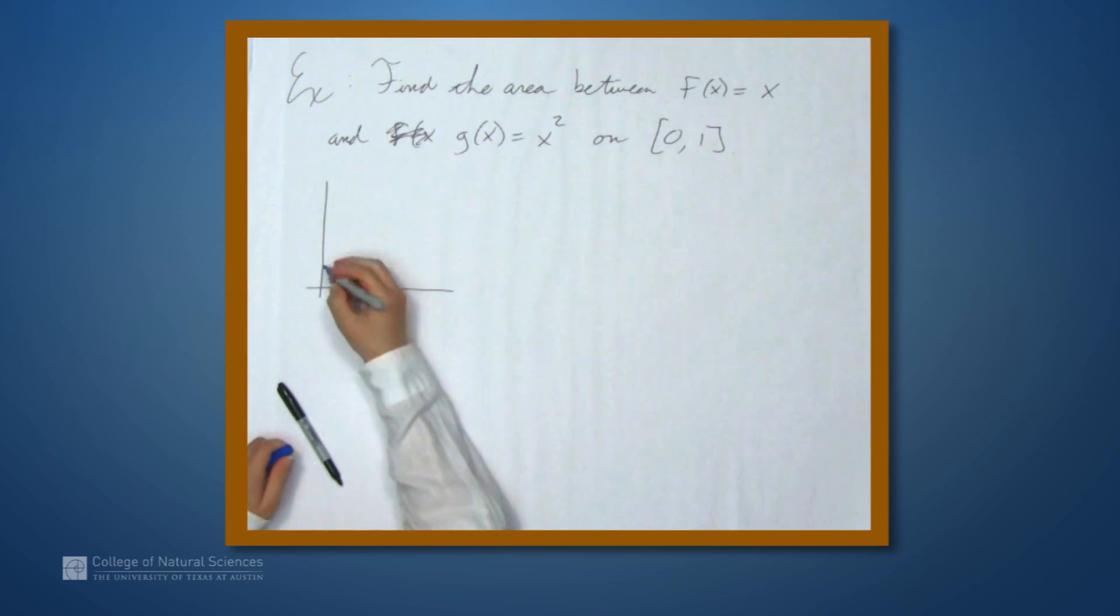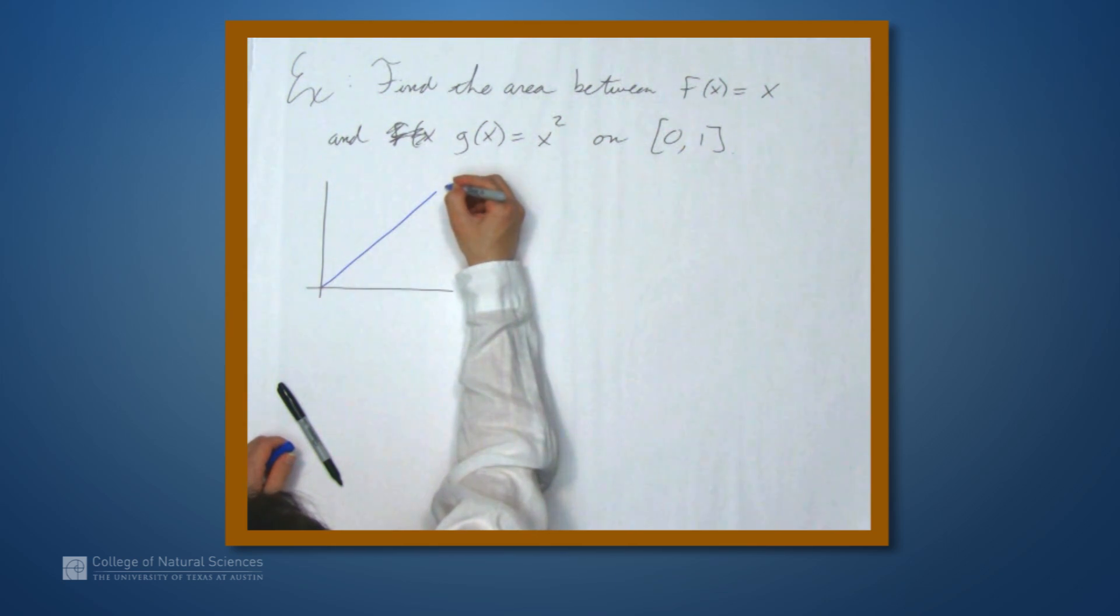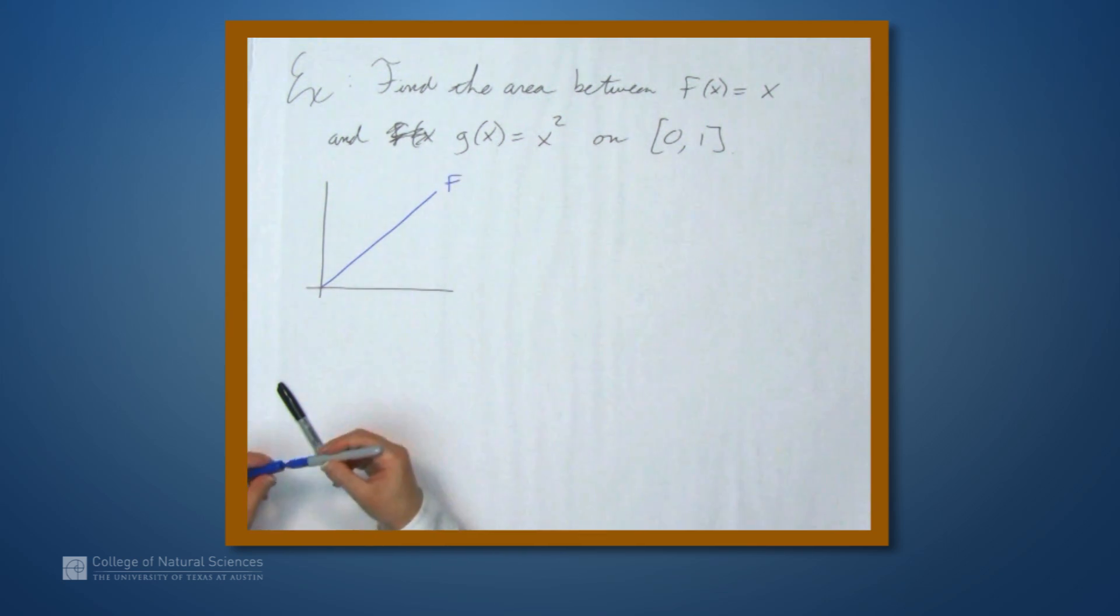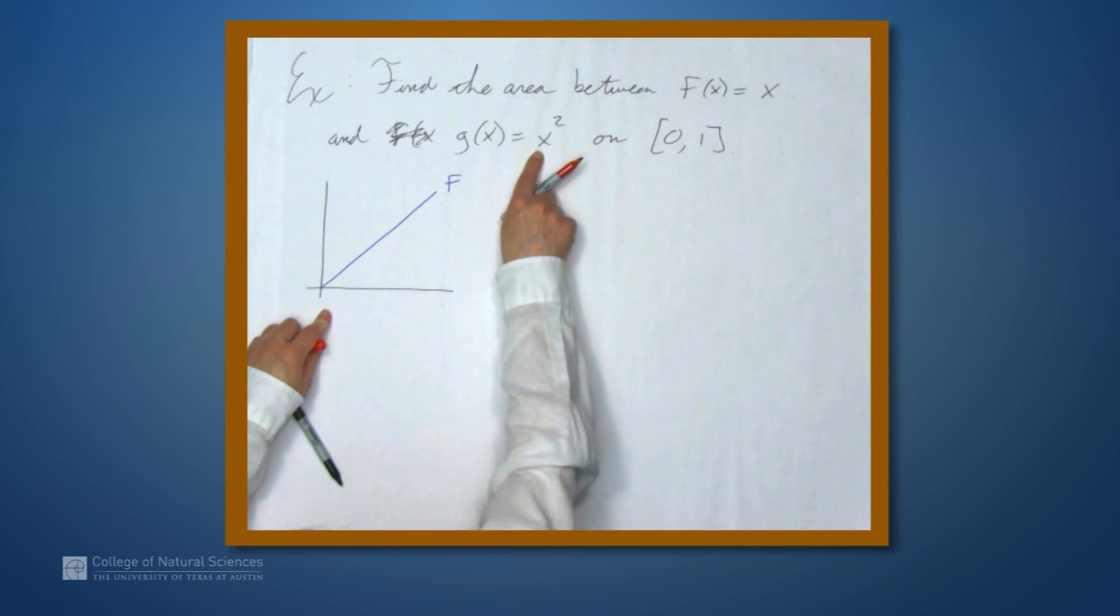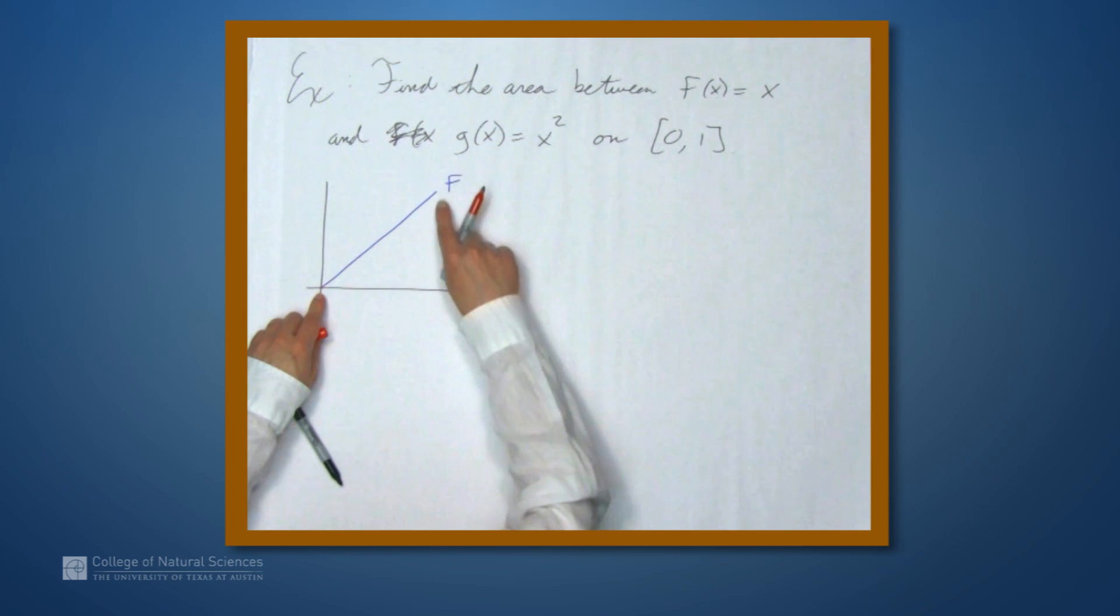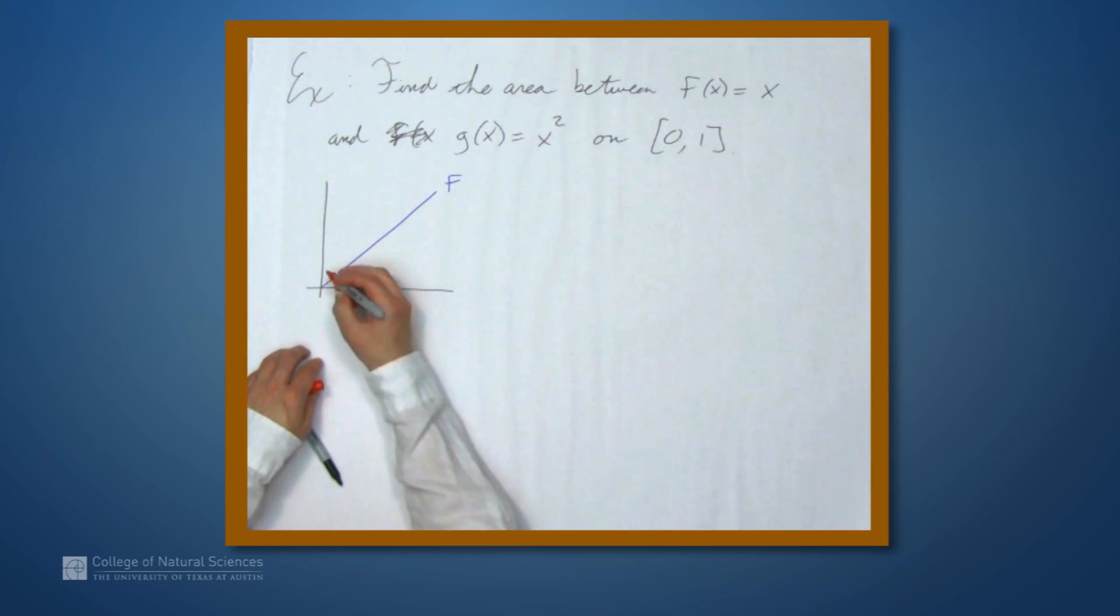And let's graph f of x in blue and g of x in red. So g of x is x squared. On 0, 1, we know that g of 0 is 0 and g of 1 is 1, so the graph of g is going to intersect the graph of f at 0 and 1.